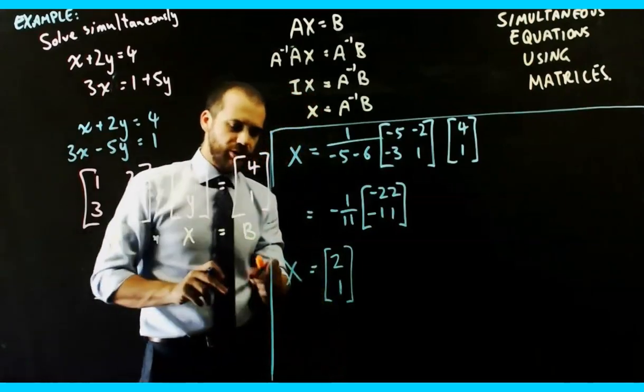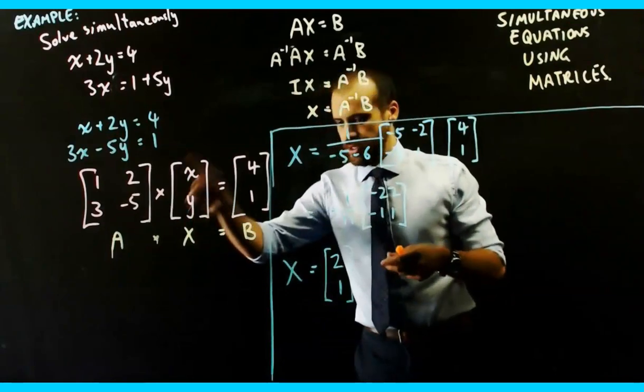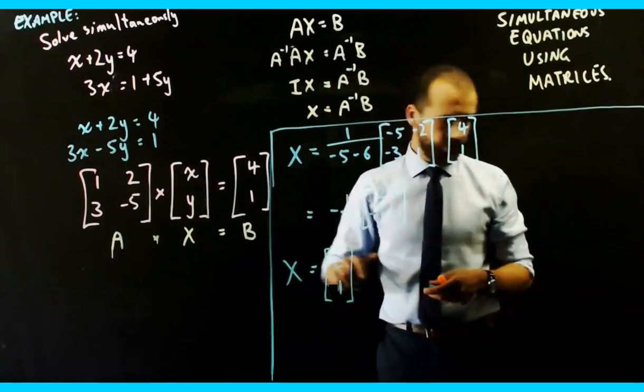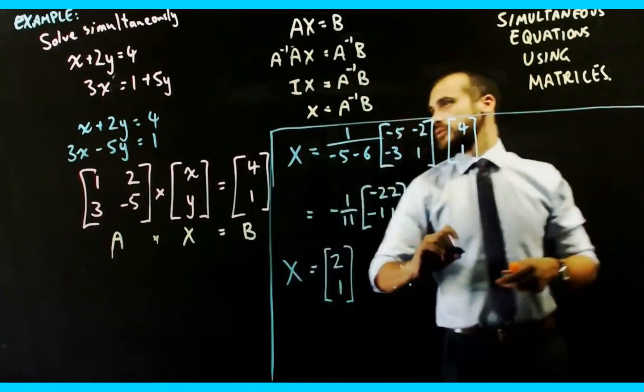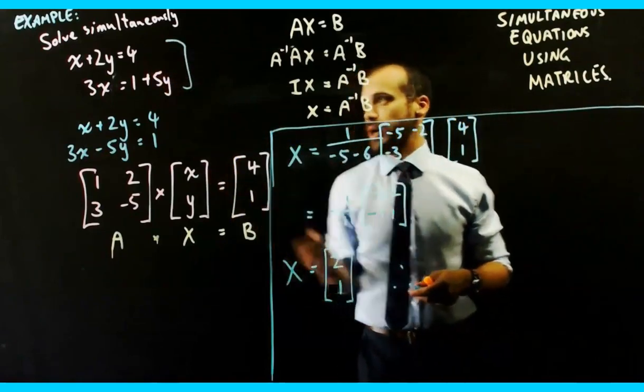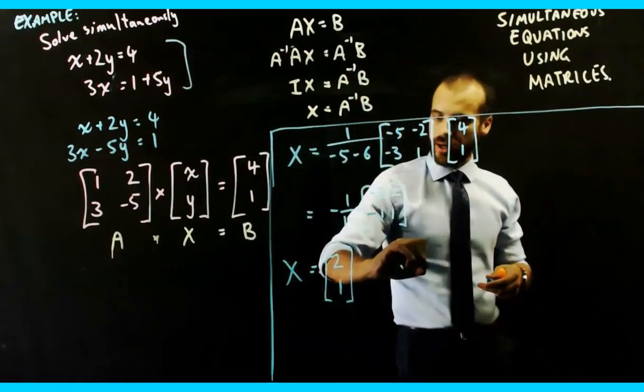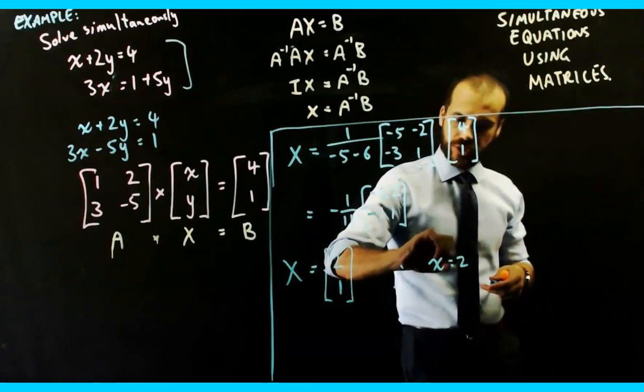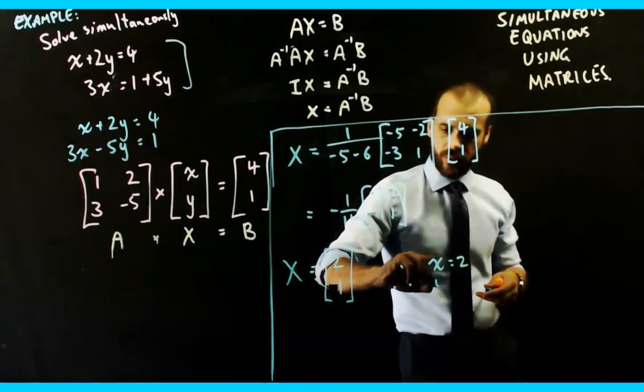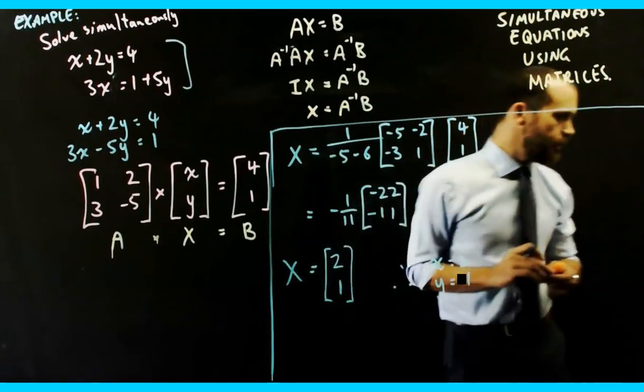So now we know that matrix X, which is that, is 2, 1. Therefore, for that set of equations, X is equal to 2 and Y is equal to 1.